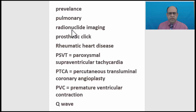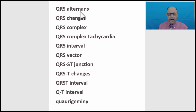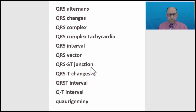Pulmonary. Radionuclide imaging. Prosthetic click. Rheumatic heart disease. Paroxysmal supraventricular tachycardia. Percutaneous transluminal coronary angioplasty. Premature ventricular contraction. Q-wave. QRS alternance. QRS changes. QRS complex. QRS complex tachycardia. QRS interval. QRS vector. QRS-ST junction. QRS-T changes. QR-ST interval. QT interval.